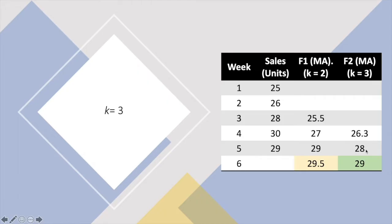I'm always using the prior 3 observations for each forecast. So if the value of K changes — in this case K=2 and K=3, and you can even use K=4 and so forth depending on your number of observations — the forecasted value is going to be different. When K equals 2, the forecast for week 6 is 29.5, and when K equals 3, the forecast value is 29. So which should I pick to forecast for week 6?